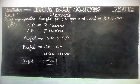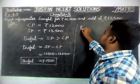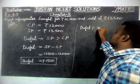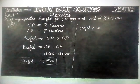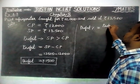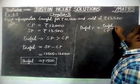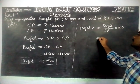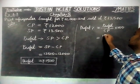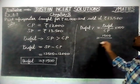The profit amount is Rs. 1,500. Now we are going to find the profit percentage. Profit percentage formula: profit divided by cost price, into 100. Here the profit amount we found is 1,500.